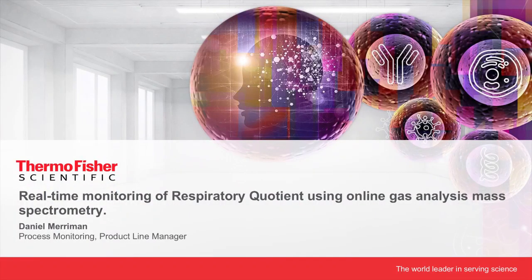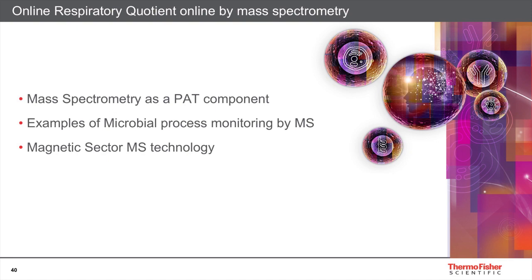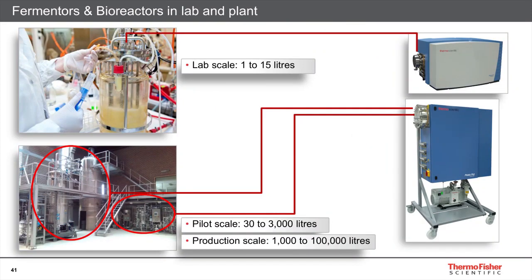The next subject is real-time monitoring of respiratory quotient using online gas analysis mass spectrometry. Three subjects will be covered: mass spectrometry as a process analytical tool component, examples of microbial process monitoring by mass spectrometry, and an introduction to magnetic sector mass spectrometry technology. Whether monitoring lab scale, pilot plant scale, or production scale fermentation and cell culture processes, mass spectrometry has been used for many years to monitor sparge gas and headspace gases from many types and sizes of fermenter and bioreactor.